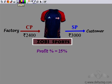Zobie Sports wasn't too happy with this profit percentage. They wanted a profit of at least 50 percent. But the factory was selling it at 2400 rupees. So what price should they sell it to the customer in order to gain a profit percent of 50? They want profit percentage of 50, we know the cost price — all we need to do is find the selling price.